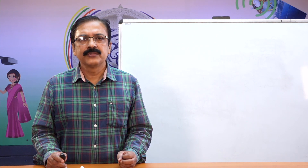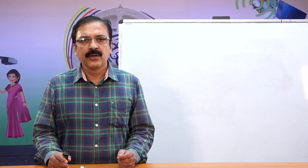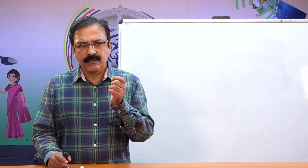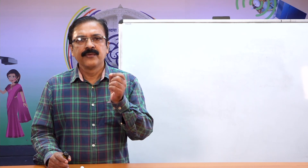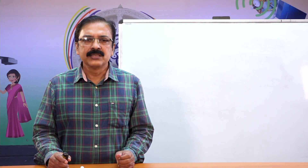Then, what is an angle? An angle is formed when two rays originate from the same end point. As we know, a ray has one end point and extends infinitely. So, if two rays have a common origin or end point, then an angle is formed.